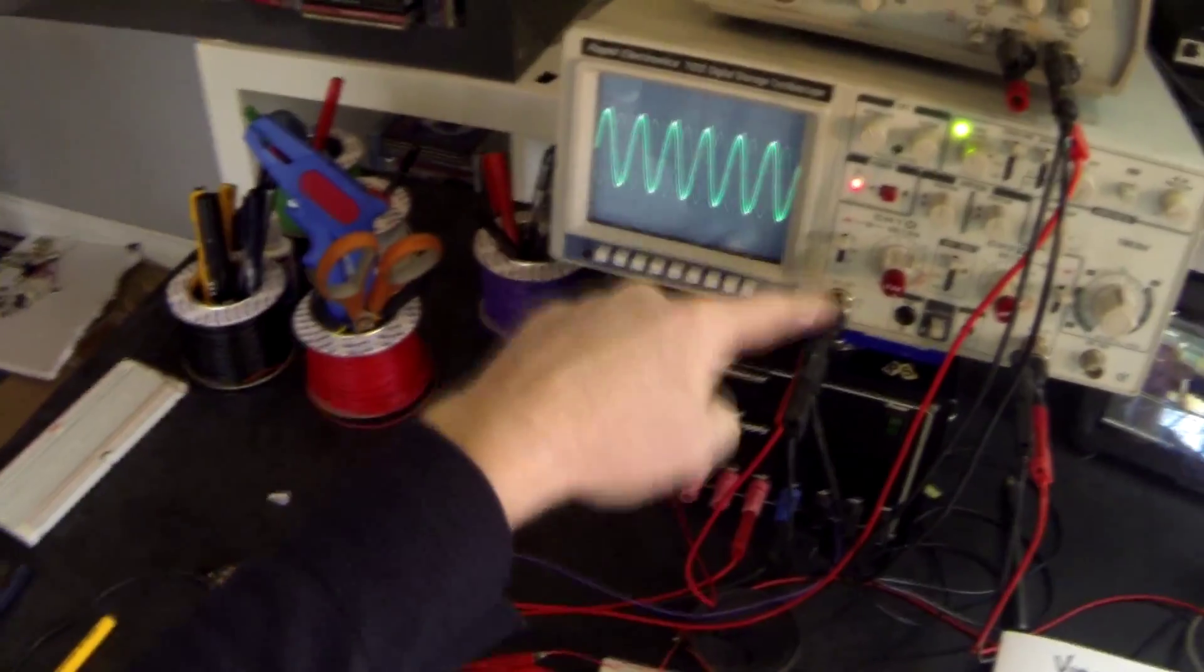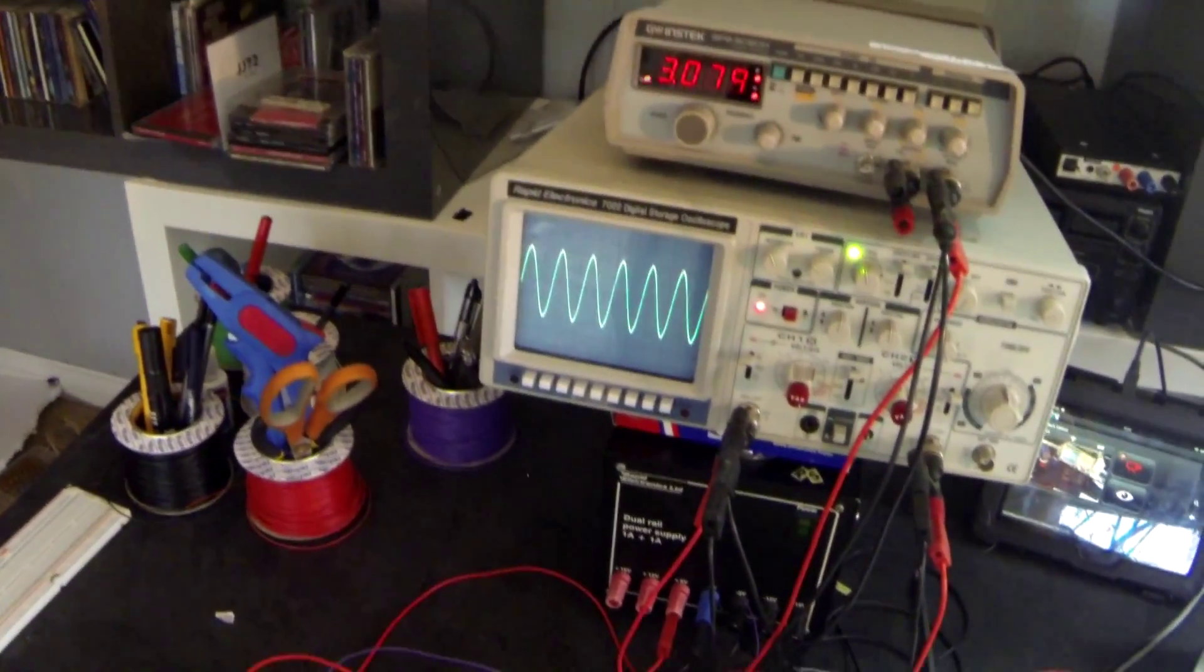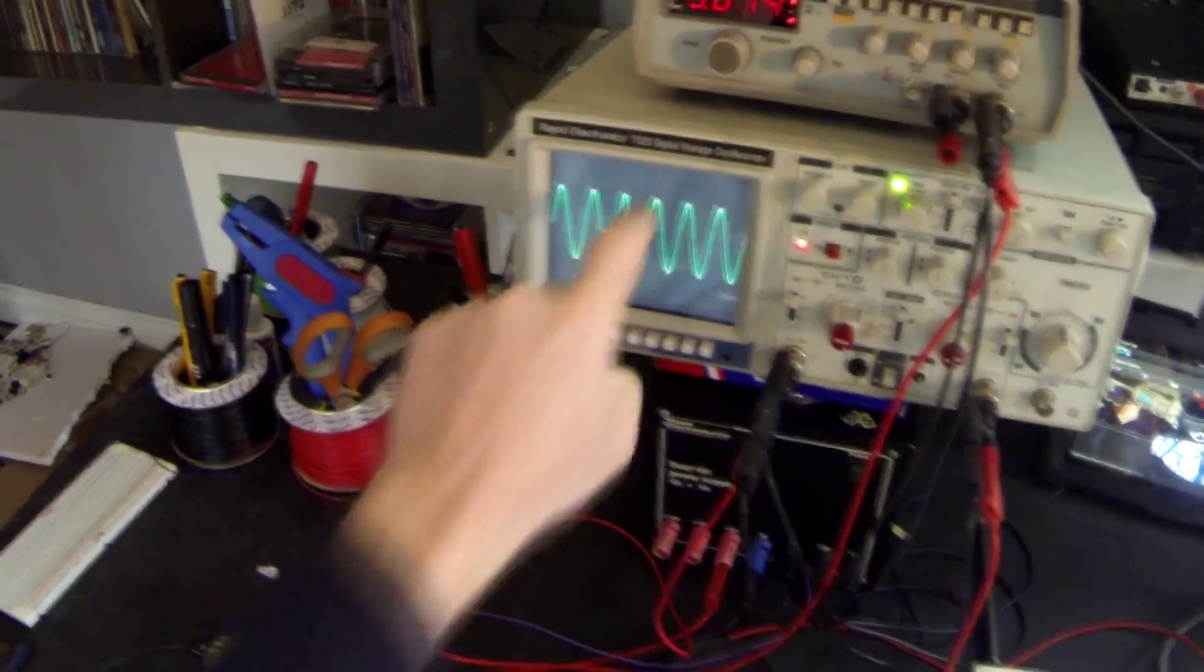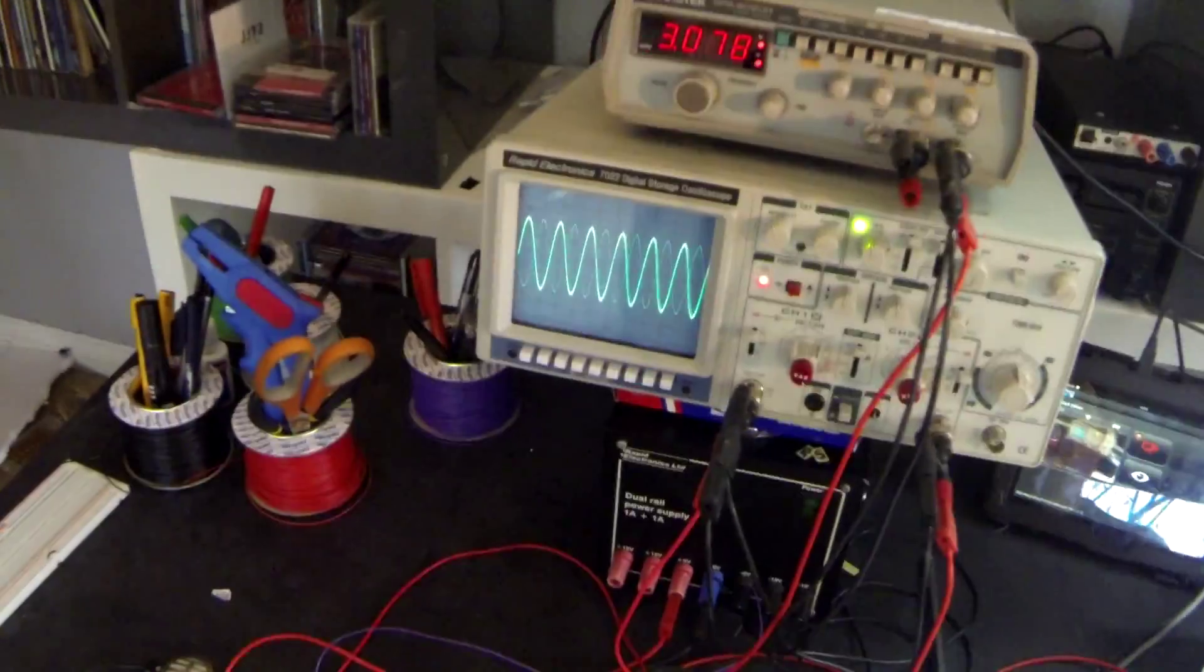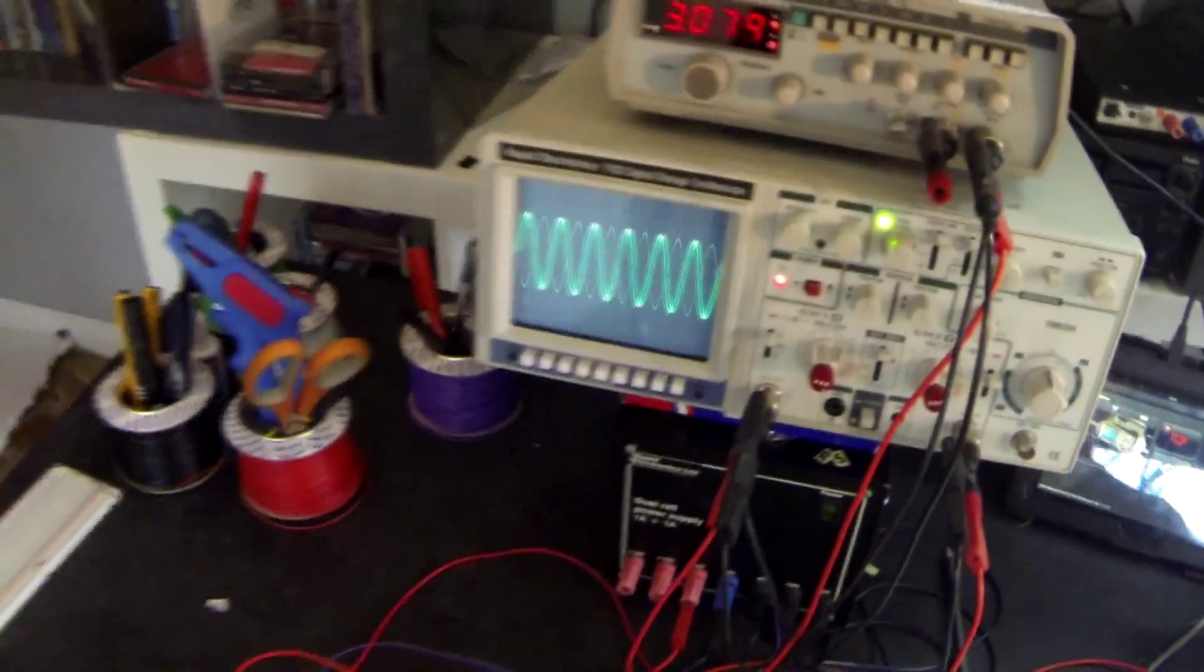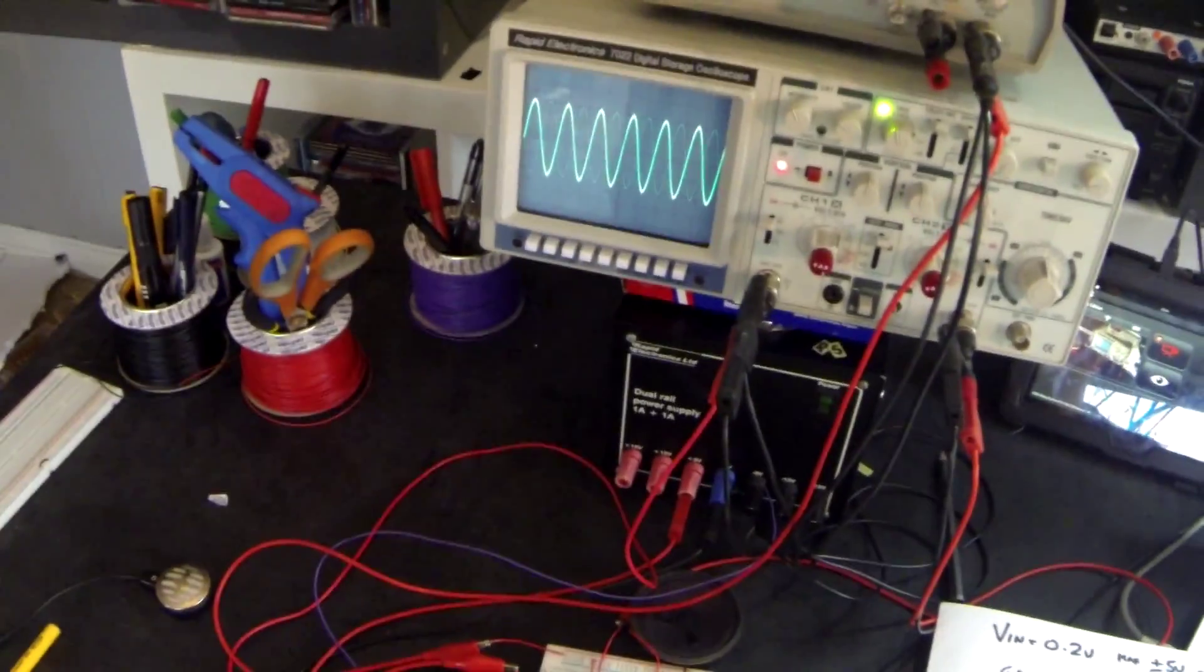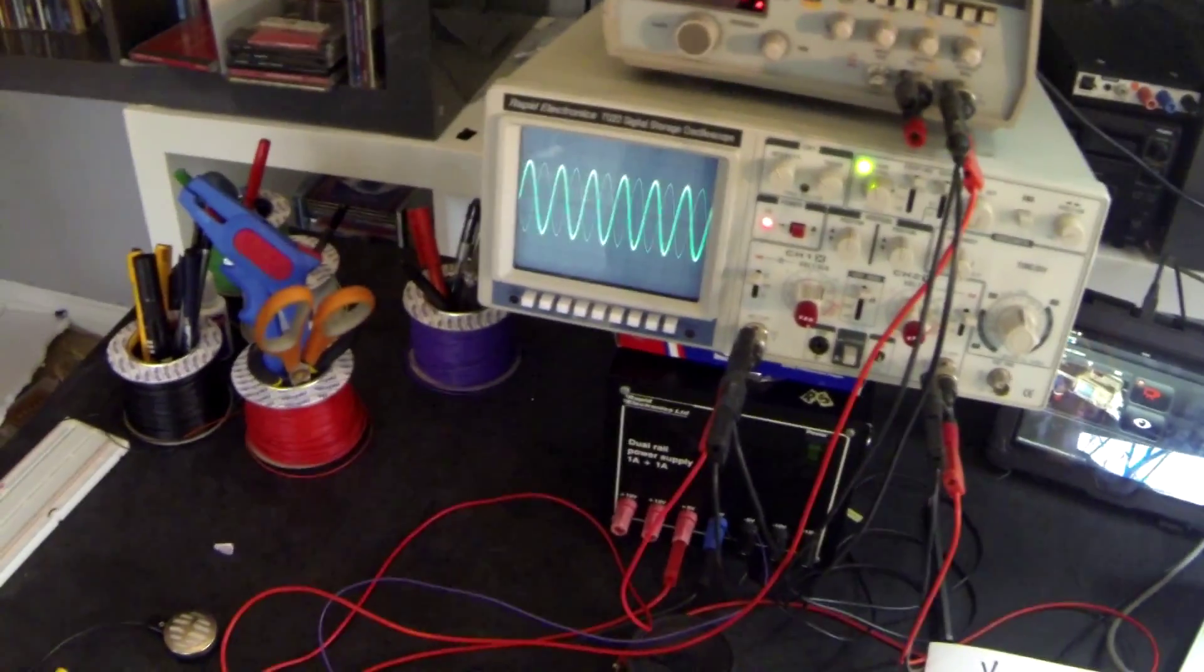And on channel one of my oscilloscope here is my input from my frequency generator. And we can see that it is currently one, two, three, four divisions times 50 millivolts, which is 200 millivolts, which is 0.2 of a volt. So that is the same as my microphone was giving me in the last activities.